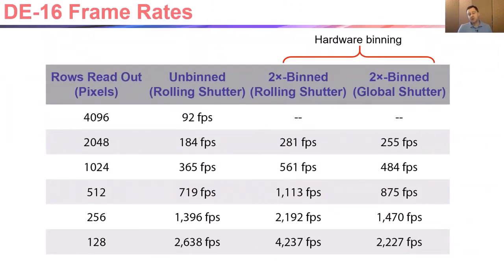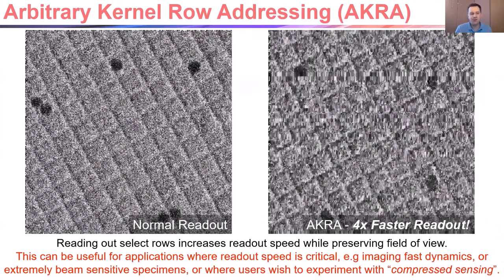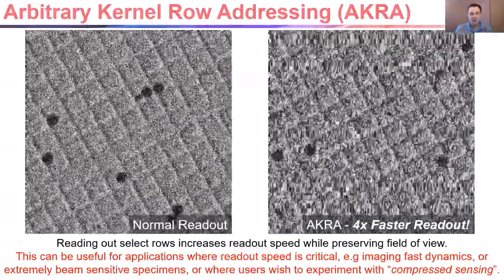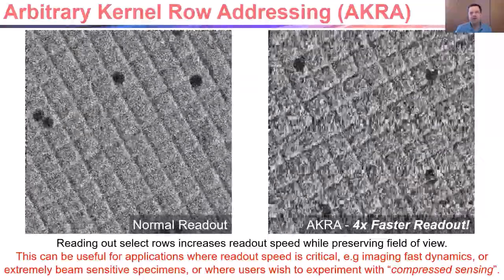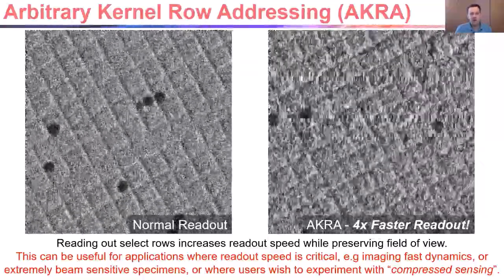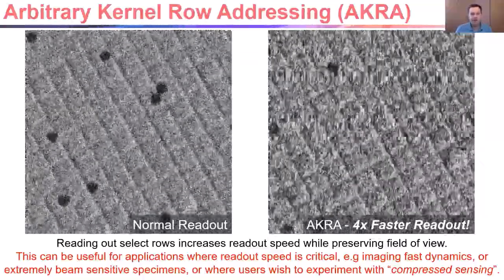This table shows the different readout speeds that the DE16 is able to achieve under different conditions. The most important thing to note is that like with any CMOS camera, the readout speed increases as you reduce the number of rows that you need to read out. This leads me to another unique feature of the DE16 called ACRA, which lets you record movies at faster readout speeds while preserving your field of view by selectively skipping the readout of rows from across the camera.